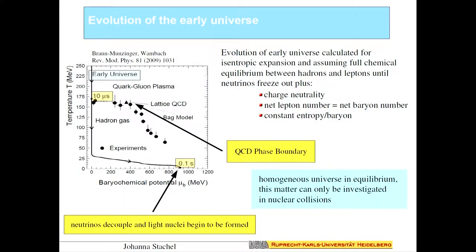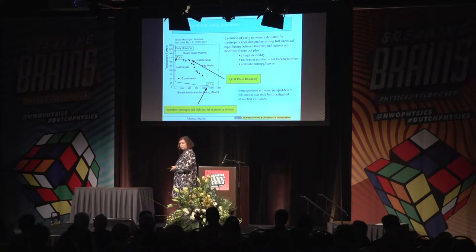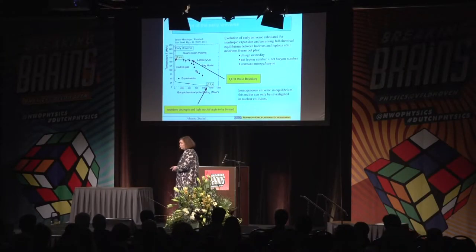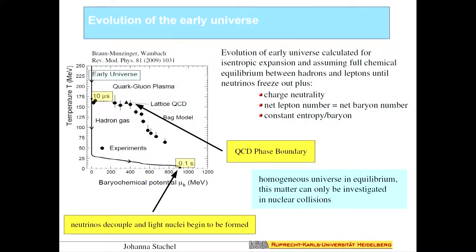Where is the early universe on this phase diagram? In the early universe we had nearly identical numbers of quarks and antiquarks, leptons and antileptons. So the early universe comes down as a vertical arrow at zero baryon chemical potential, crossing the phase boundary at about 10 microseconds. The quarks and gluons crystallize into hadrons — all the known roughly 300 species, mostly decaying rapidly. The universe cools further, neutrinos decouple, and light nuclei begin to form.